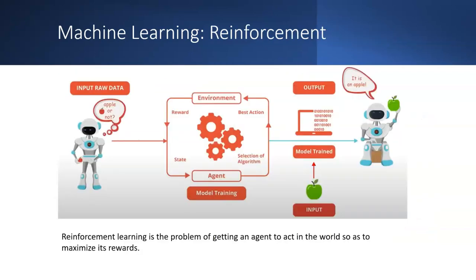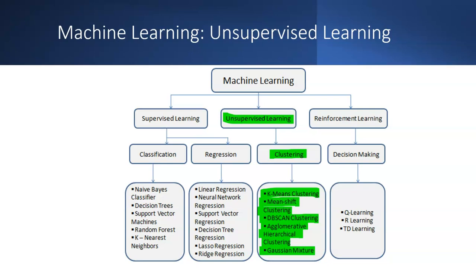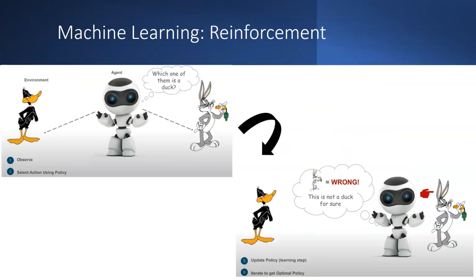Reinforcement learning uses feedback through a reward and punishment system. It is used in systems like ChatGPT and Gemini. The goal is to get an agent to act in the world so as to maximize its rewards. Examples of algorithms include Q-learning, R-learning, and TD-learning. For instance, if an image is not a duck, there is a punishment; if it is a duck, there is a reward.